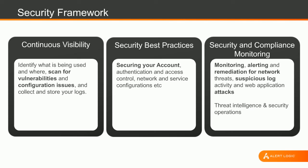To sum up all the things we've been talking about so far, there are really three buckets we can put them into. First, we want to make sure we're configuring the platform according to security best practice — all the accounts are locked down, people only have access to what they need, and all the network configuration is correct. Second, we want continuous visibility into what's going on — scanning for vulnerabilities and configuration issues, and collecting and storing the logs. Third, we need security and compliance monitoring — monitoring, alerting, and remediation for network threats, suspicious activity in the log data, and anomalous activity in the web application firewall — all underpinned by continuous threat intelligence, security operations, and security updates.